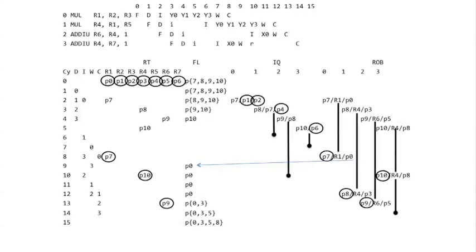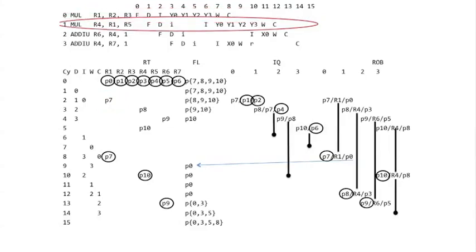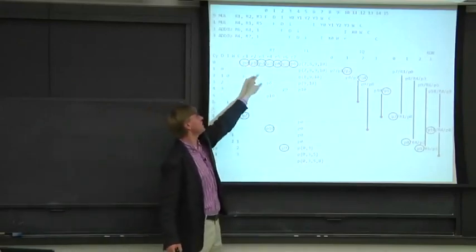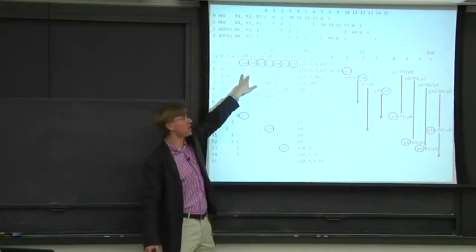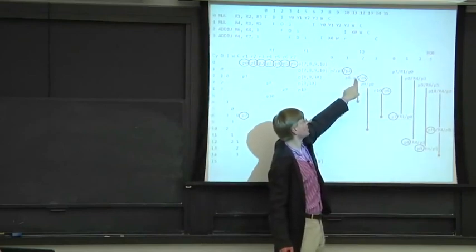As we execute, the first instruction writes to register one, so we rename it — register one gets renamed to physical register seven in the rename table. Then the next instruction, a multiply, tries to read register one. It looks up the rename table and sees it's in-flight in physical register seven. So we record that its source is physical register seven — currently not ready. The other input, register five, got renamed to P4 and is ready to go.